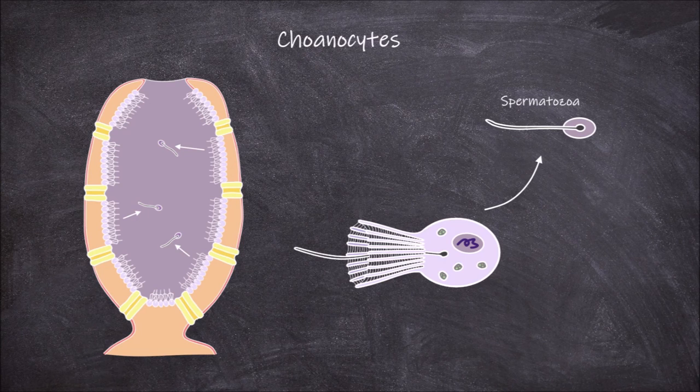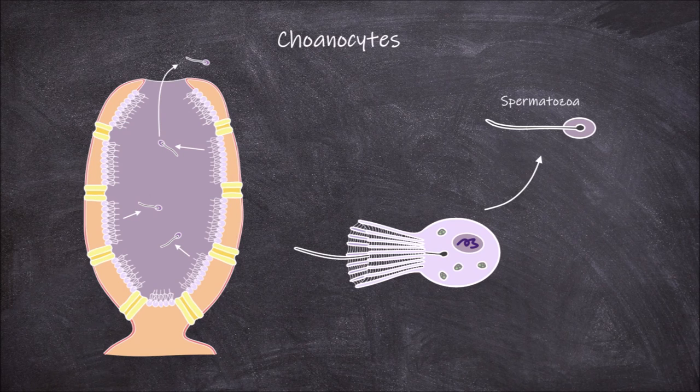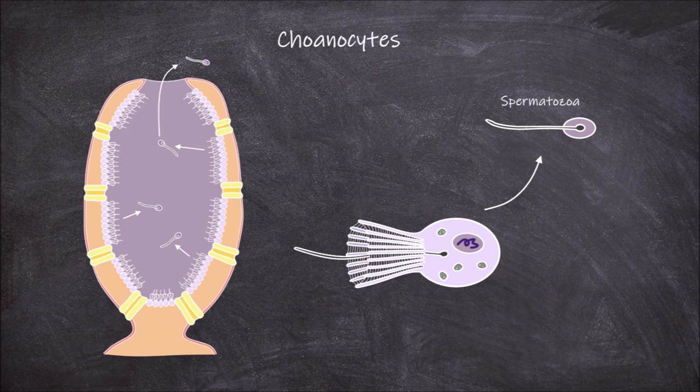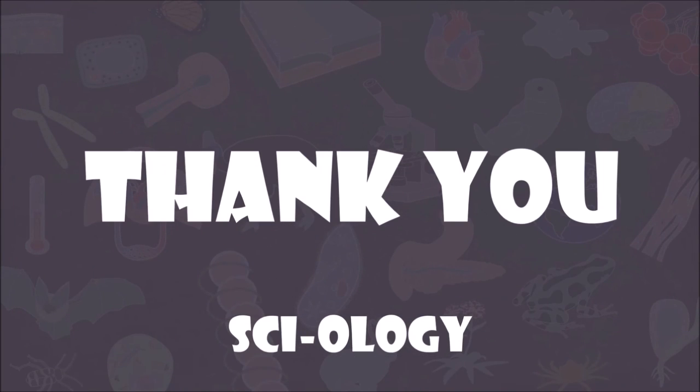After differentiating, they will move from the internal surface of the sponge and leave the sponge with the flow of water out of the osculum. And that concludes this video on the structure and function of a choanocyte.